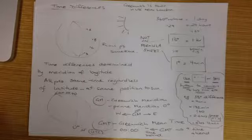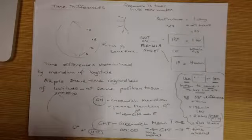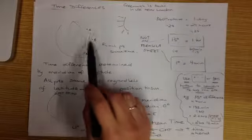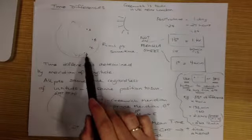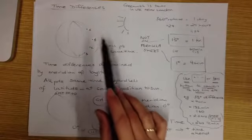So remember we said that the differences in time are measured according to the longitudinal distance. Because if I've got points A, B, C and D, they're all at the same position at the same time.